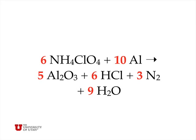As a check, we count and we have six nitrogen atoms, twenty-four hydrogen atoms, six chlorine atoms, twenty-four oxygen atoms, and ten aluminum atoms on both sides of the equation. That's a general set of examples and a general strategy for balancing chemical equations.